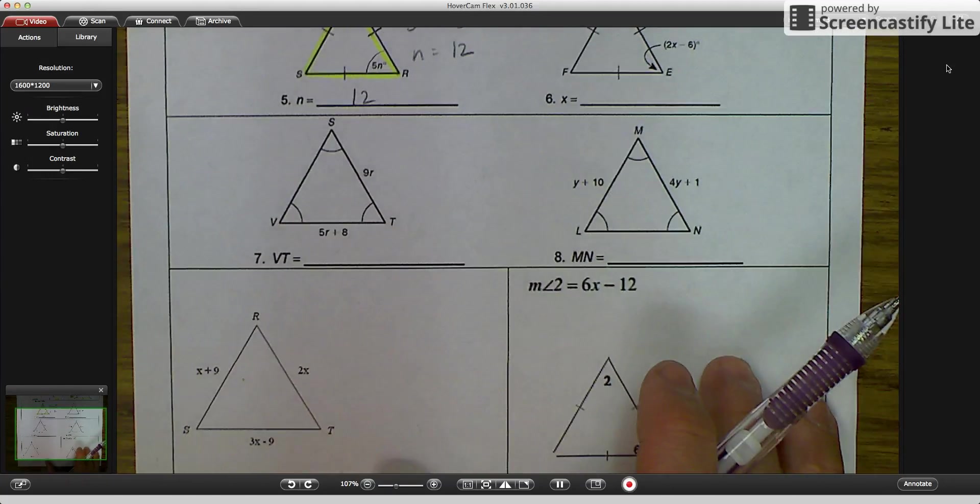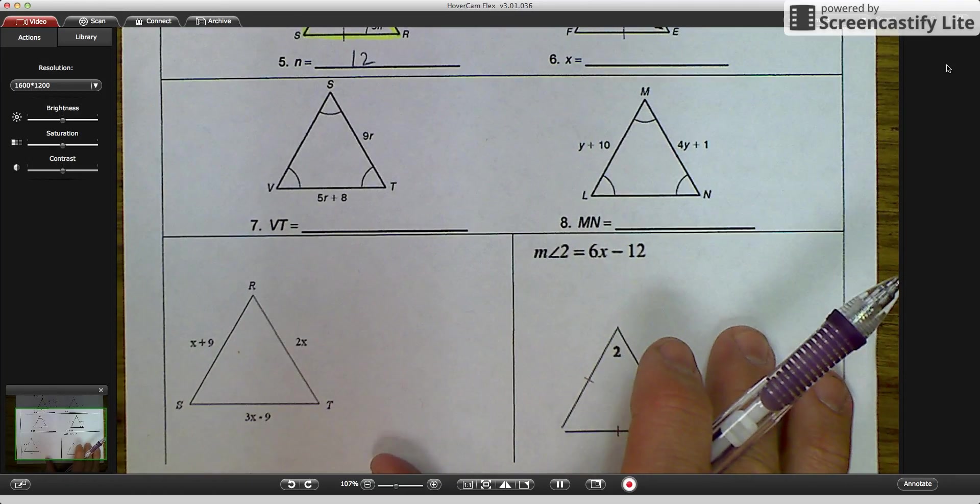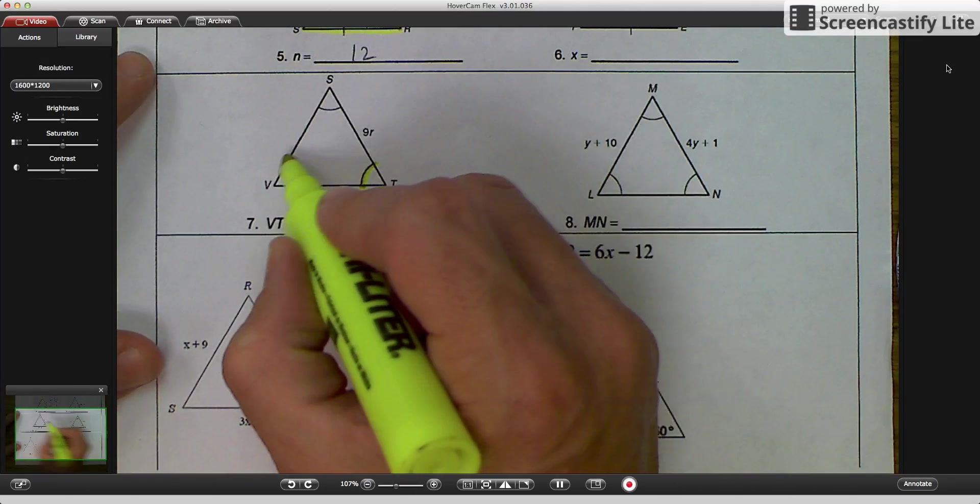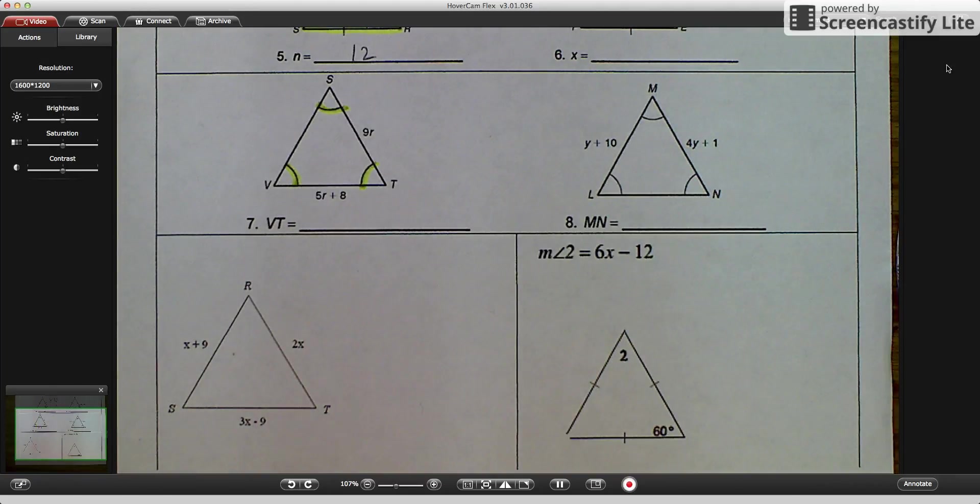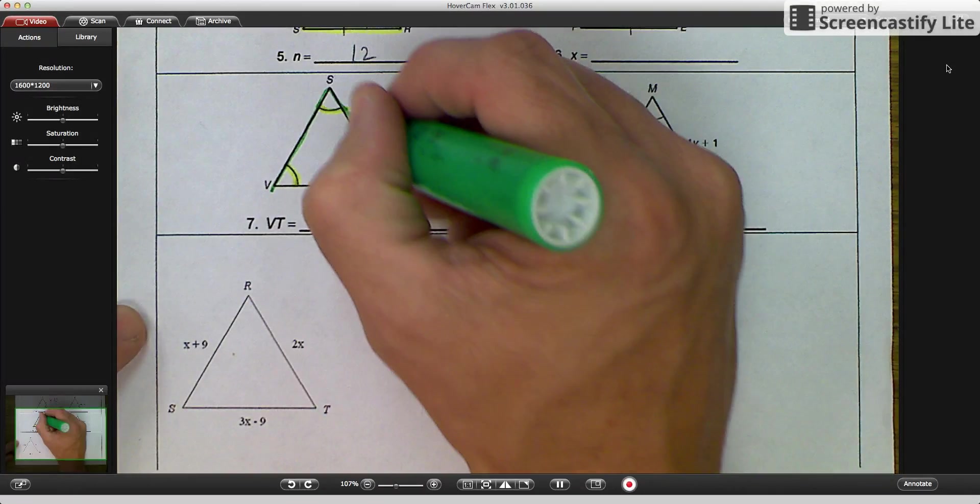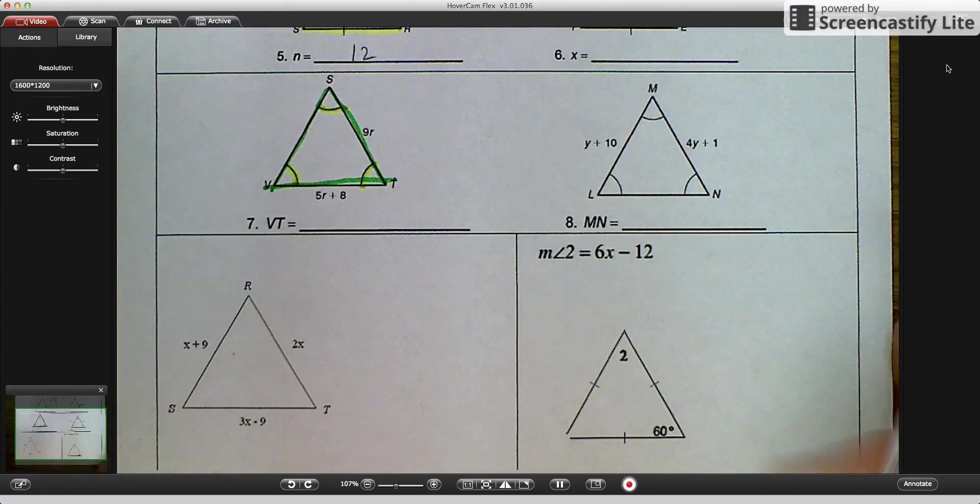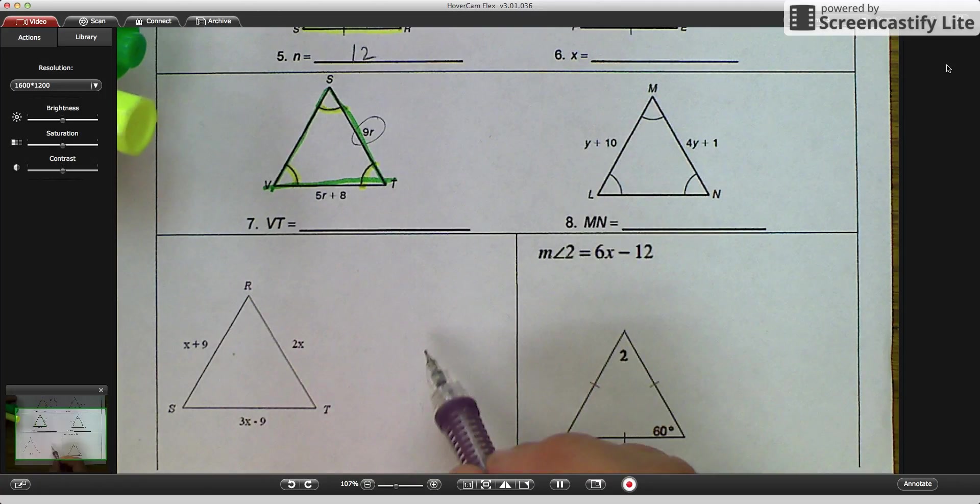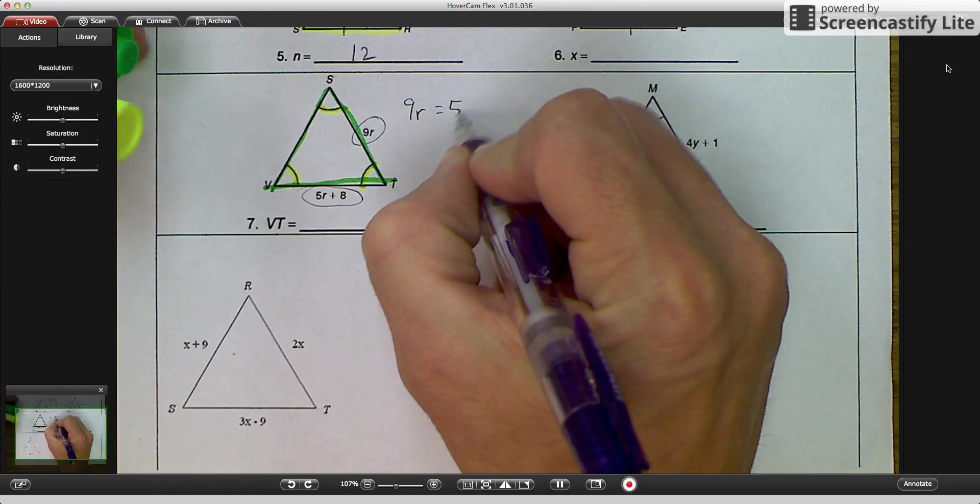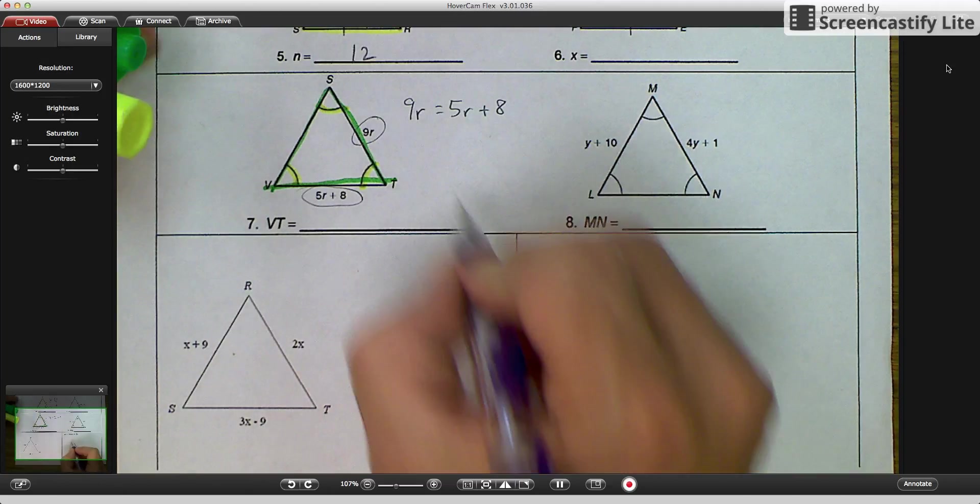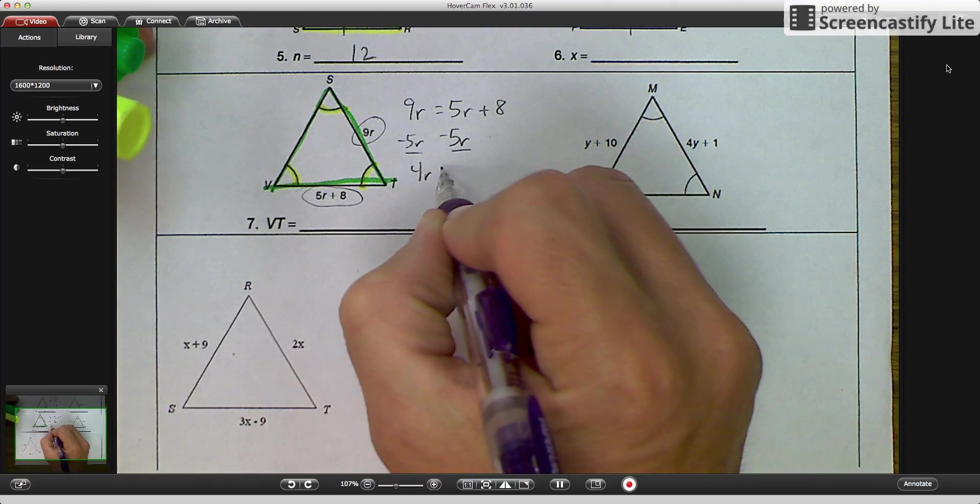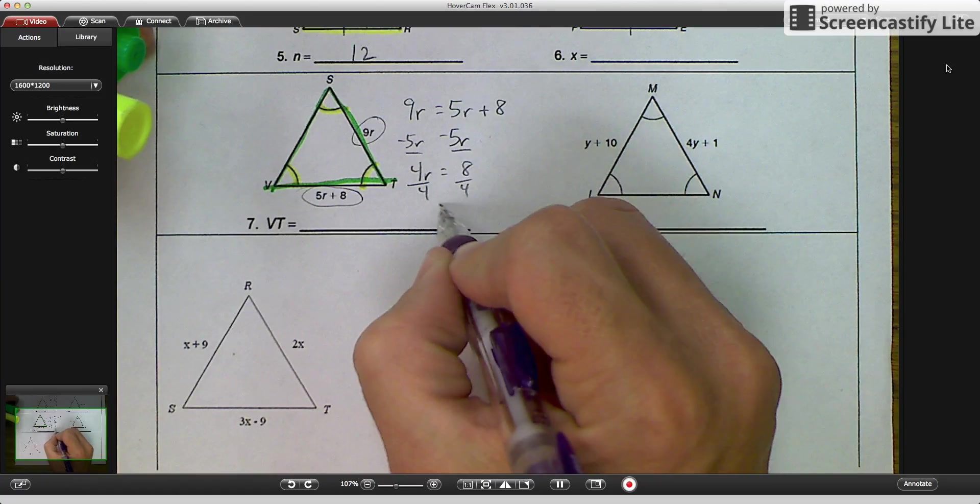As we come down to the last four examples, on example 7, we see that it is equiangular. And from the corollary, we know that if it's equiangular, it is also equilateral. So, I'm going to highlight these sides as well, and I'm going to say if it's equilateral, this side of 9r is congruent to this side of 5r plus 8. So my equation would be 9r is equal to 5r plus 8. And then, subtract 5r, and you get 4r is equal to 8. Divide it by 4, r equals 2.